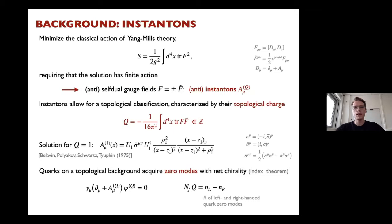For background: self-dual gauge fields minimize the classical action of Yang-Mills theory under the requirement of finite action. One example of these are instantons, or anti-instantons with negative topological charge. As was beautifully explained, they are characterized by topological charge, which is an integer.